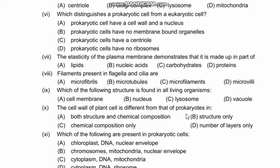Question 10: The cell wall of a plant cell is different from that of prokaryotes in — both structure and chemical composition, structure only, chemical composition only, or number of layers only. Plant cell walls contain cellulose, whereas prokaryotic cells contain peptidoglycan. Right option is A — both structure and chemical composition.